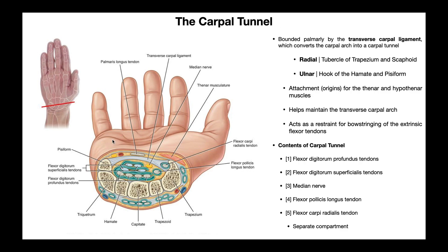In this picture right here, they've taken a cross-section basically right through the wrist. Right here you actually see the carpal bones. The red line represents where they took the cross-section — it's pretty much splitting the eight carpals right in half. Remember, there are eight carpal bones, two rows of four.